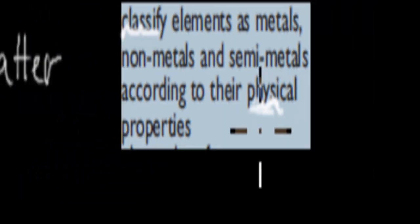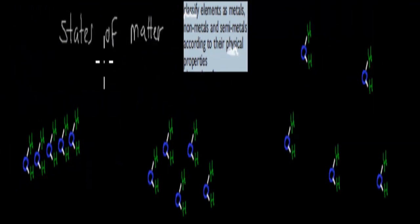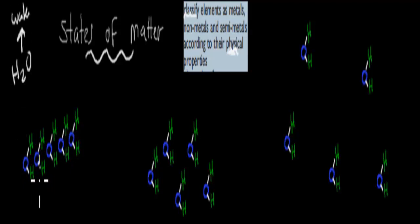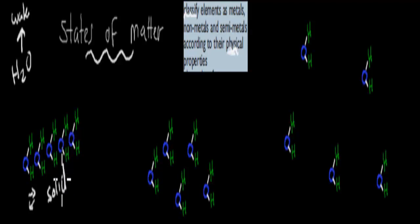Before we start, I'll quickly go over what physical properties are. To understand that, we need to go over what states of matter are as well — you might remember this from your grade 9 and 10 chemistry. There's something called solids, liquids, and gas. If you imagine H2O particles all really close together, and all they do is vibrate on the spot — going back and forth just a tiny bit — they're all really close and they just vibrate.